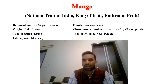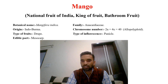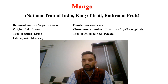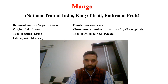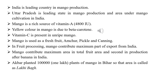Polyploidy is of two types: autopolyploidy and allopolyploidy — we will discuss in plant breeding lecture. The type of fruit is drupe and the type of inflorescence is panicle. The edible part is the mesocarp. India is the leading country in mango production and area, and also in export. In India, Uttar Pradesh is the leading state in mango production and area, and Andhra Pradesh is at second position.